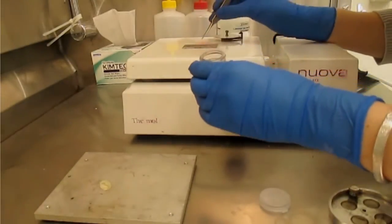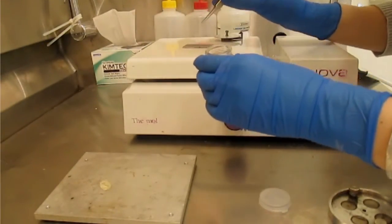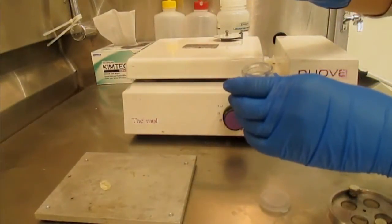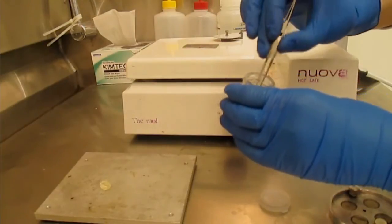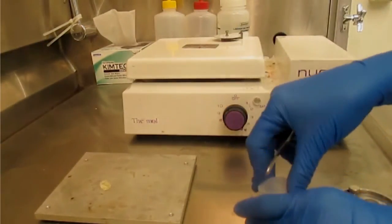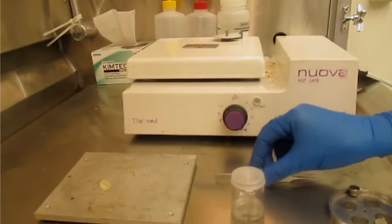Once the crystal bond adhesive melts, use tweezers to gently release the disc from the specimen plate. Soak the disc in acetone for at least 30 minutes to remove the crystal bond adhesive.